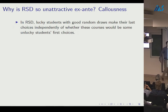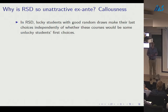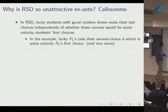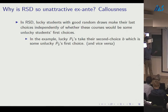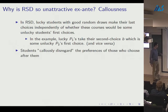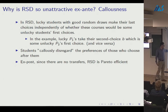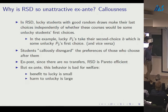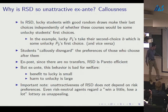In the random serial dictatorship, lucky students with good random draws make their last choices independently of what that choice might have been some unlucky student's first choice. In the example, lucky P1s take their second choice B, which is some unlucky P2's first choice, and vice versa. Ex post, since there are no transfers, the random serial dictatorship is Pareto efficient — but ex ante this behavior is bad for welfare: the benefit to the lucky is small, the harm to the unlucky is large.